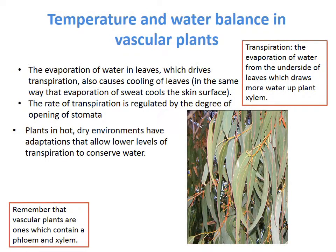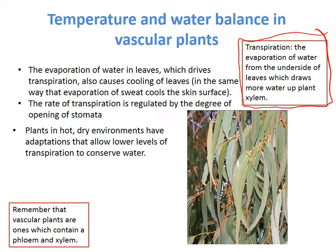We're going to start looking at animals before we move on to plants, and there are a few things you need to remember. Transpiration is the evaporation of water from the underside of leaves, which then pulls more water up the xylem of the plant. Vascular plants are ones that have phloem and xylem.